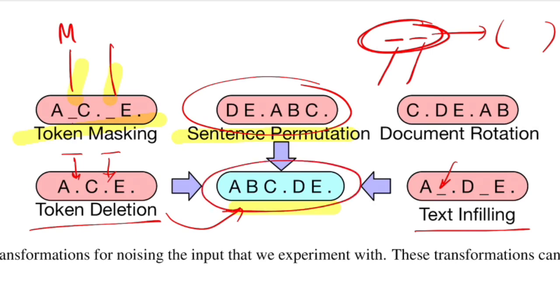The last transformation function they propose is document rotation, where they reverse the document. If input was A, B, C, what goes to encoder would be C, B, A. But we would expect the model to produce A, B, C at the decoder output. These are all the transformation functions that BART proposes, which challenges the model to really learn different aspects of the language and be robust to any kind of transformation it could face. This way, the model is also supposed to generalize well.